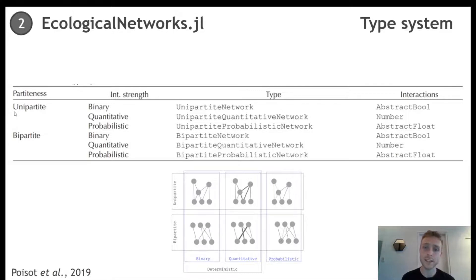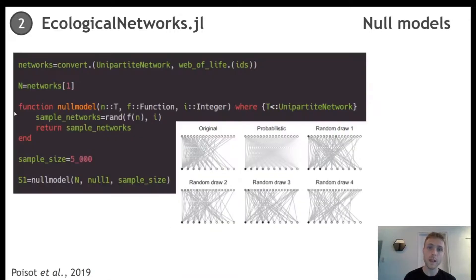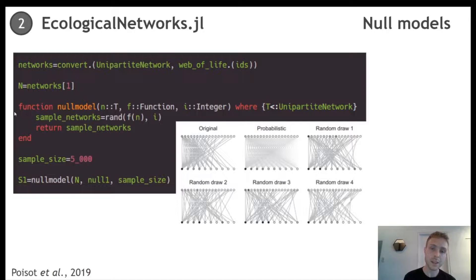But before digging into network analysis, we might be interested in simulating networks, and this is exactly what our package can do. For example, here we have an original deterministic network that we converted into a probabilistic network using a specific null model. We conducted random draws in order to have a distribution of networks under our null model. This is often done in ecology in order to compare an empirical network to other networks generated under a null model. To conduct this comparison, we can use one of the many functions provided by our package.